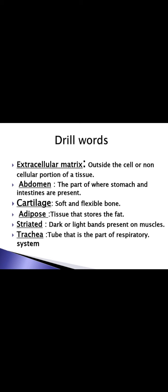Next drill word: cartilage. In simple words, cartilage is a soft and flexible bone — not hard like a regular bone; if we bend it, it bends. It is present in different parts of our body, such as the outer ear (pinna), which is flexible because it has cartilage, and the tip of our nose, which is also flexible due to cartilage.